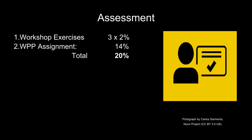The Work Portfolio Package, or WPP, assignment makes up 14% of your final grade, and the three workshop exercises contribute 2% each, making a total of 20% of your course grade.